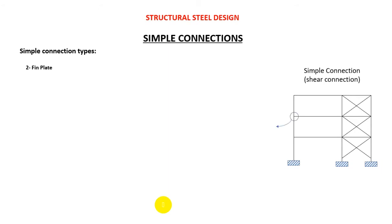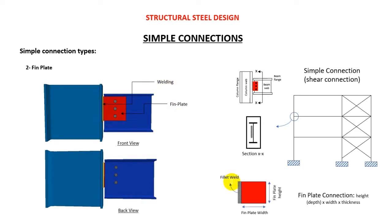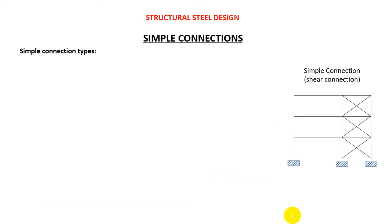The second type is the fin plate. It is a single plate on one side only — looking from the back there is no plate. The fin plate is welded to the column with a fillet weld, and bolts connect the beam to the plate.